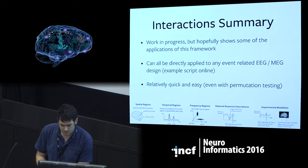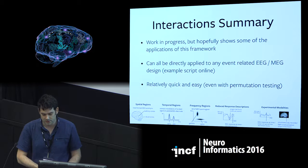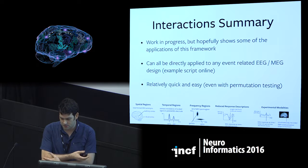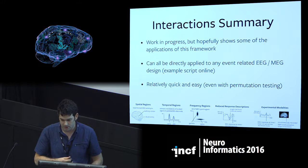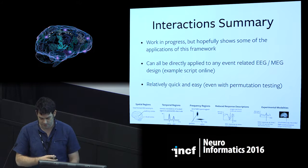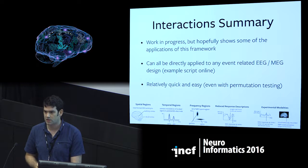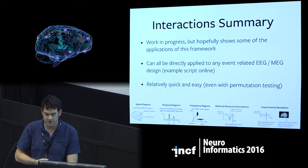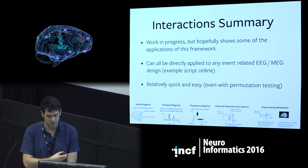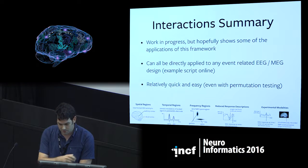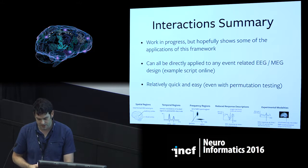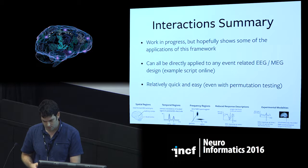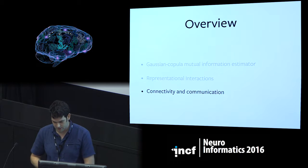This is a work in progress, but hopefully it shows some of the application. So even with a single-channel sensor level EEG, these methods can add something over standard statistical analysis. And hopefully I'll convince you that there's something useful with synergy. Although these concepts can be quite complicated, here it directly showed something useful, which was to look at the gradient. And all of this can be applied directly to EEG and MEG, and it's relatively quick and easy compared to many other computationally intensive techniques.